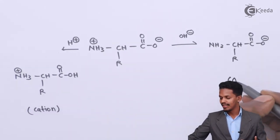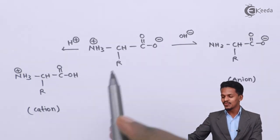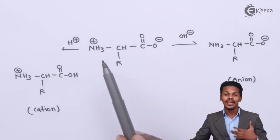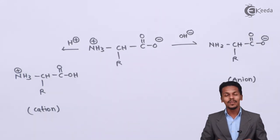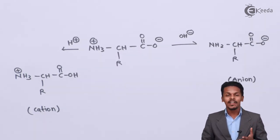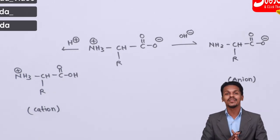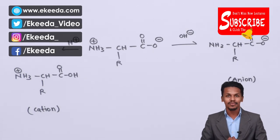So here we have a cation, and in the previous case we had an anion. The zwitterion is acting like an acid and also like a base depending upon the reaction — and that is how we have proved that amino acids have amphoteric behavior. Thank you friends for watching; I hope you understood clearly, and don't forget to subscribe to the channel.